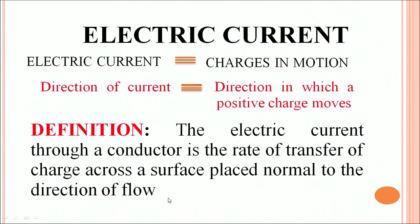So we can now think of electric current as equivalent to charges in motion and the direction of electric current can be understood as the direction in which a positive charge moves. The formal definition of electric current would be the electric current through a conductor is the rate of transfer of charge across a surface placed normal to the direction of flow.